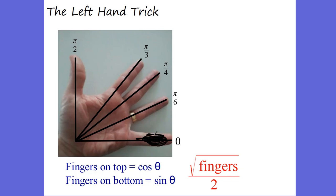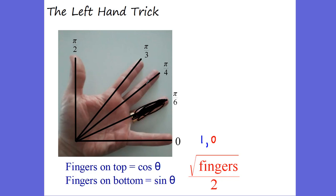At zero degrees, you fold back this finger. How many fingers on top? Four — so square root of four over two equals one. That's cosine of zero. How many fingers on the bottom? None — so sine of zero equals zero. At pi over six, you fold this finger. Three fingers on top: square root of three over two — that's cosine of pi over six. One finger on the bottom: square root of one over two equals one-half — that's sine of pi over six.